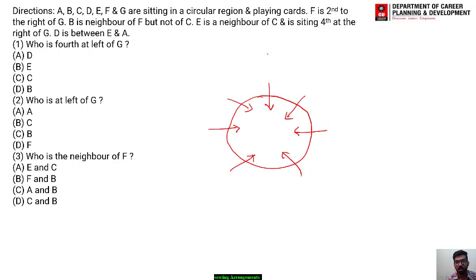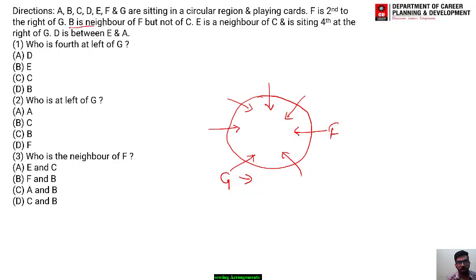The first statement says F is second to the right of G. We don't know where F and G sit, so let's suppose G is here. Right of G is this direction, second means here, so F will be here. Next part says B is the neighbor of F but not of C. There are two conditions, so we construct case number one and case number two.